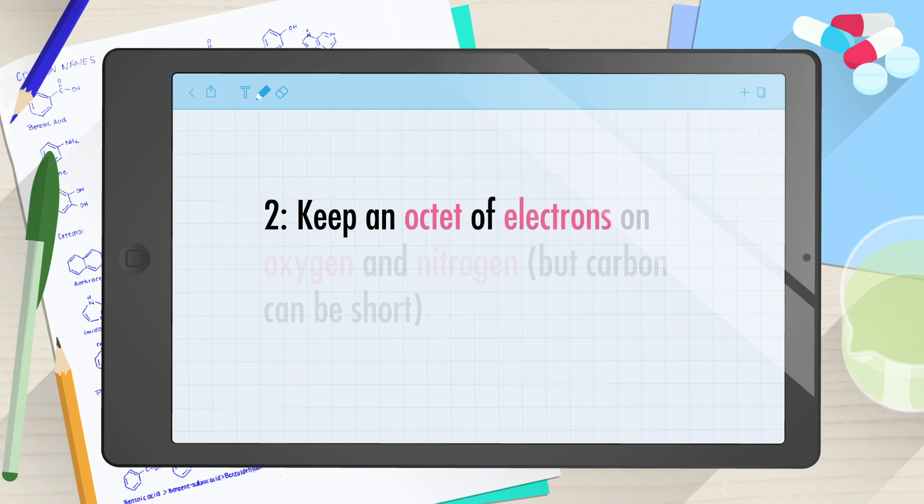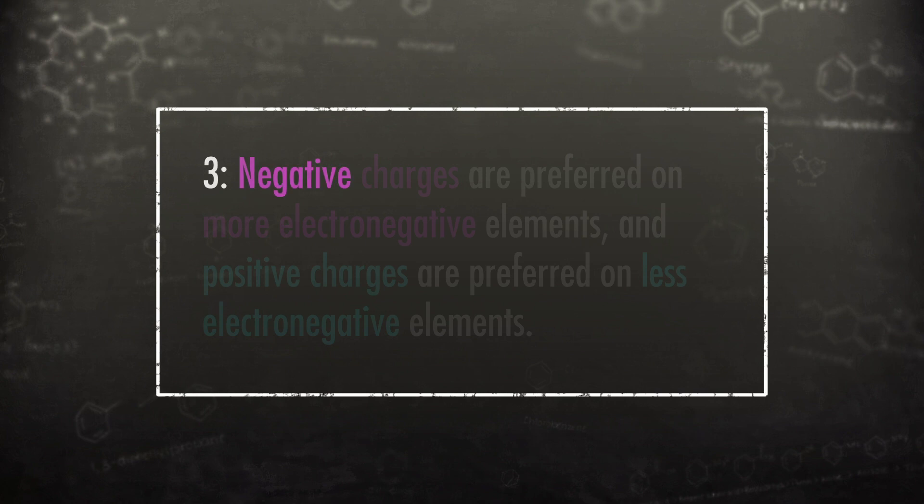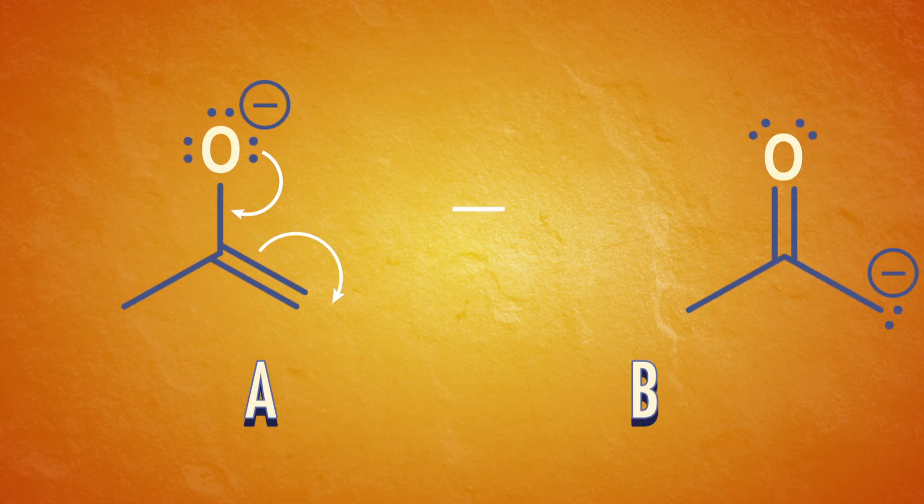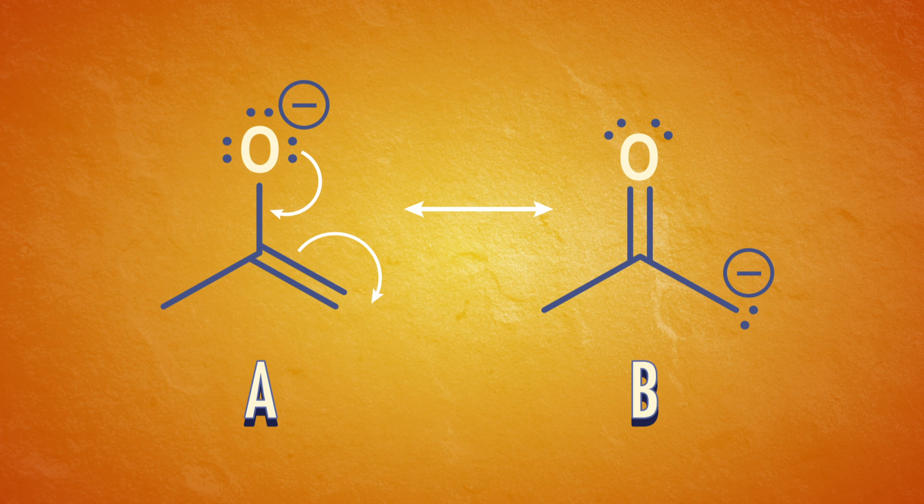And number three, negative charges are preferred on more electronegative elements, and positive charges are preferred on less electronegative elements. For example, both of these resonance forms have an octet, but one has the negative charge on the more electronegative element. So, structure A is our winner and contributes more to the resonance hybrid.